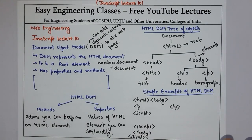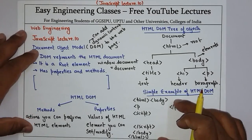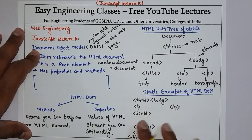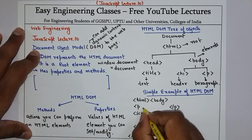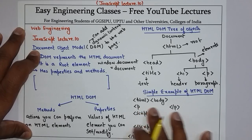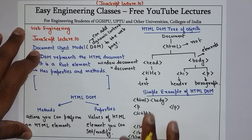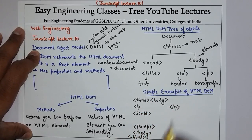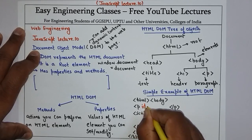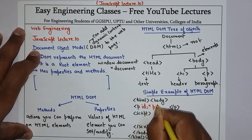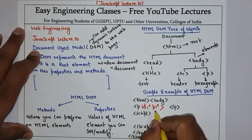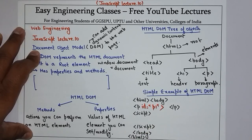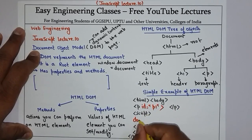अब एक simple example देखते हैं कि HTML DOM को use करके हम कैसे dynamic content add कर सकते हैं। मैंने एक बहुत basic सा यहाँ पे लिखा है — HTML body, then paragraph, और एक script है। अब paragraph के अंदर मैं कुछ भी लिख सकता हूँ, वो मुझे show होगा, but I want this to be set via JavaScript। तो हम paragraph को id दे देते हैं — suppose p1 — और इसकी value यहाँ पे set नहीं करेंगे।